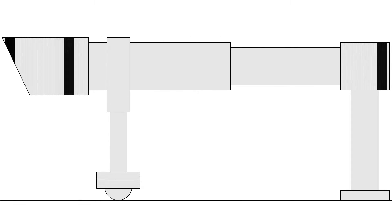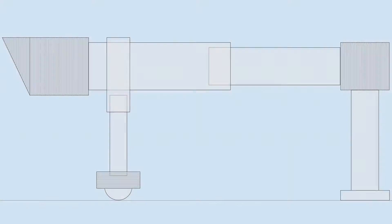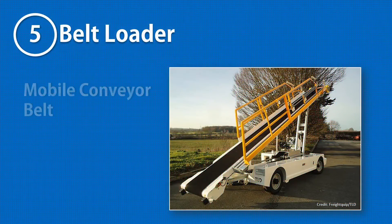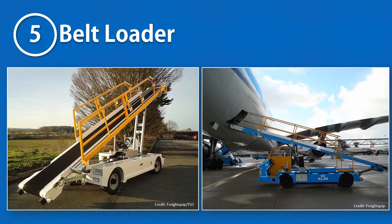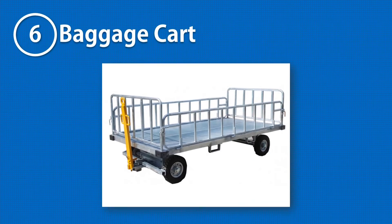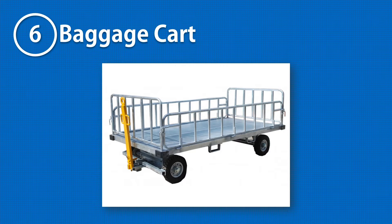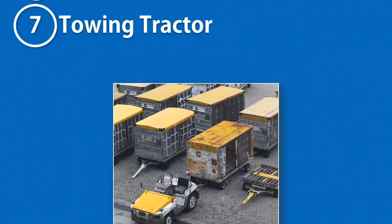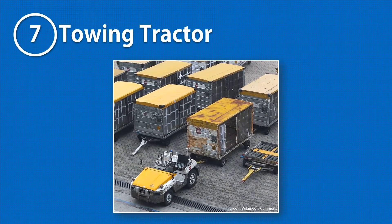A belt loader is a mobile conveyor belt used for loading passenger luggage in narrowbody aircrafts. An associated non-motorized piece of equipment with the belt loader is the baggage cart, which is simply a cart on wheels for storing luggage.